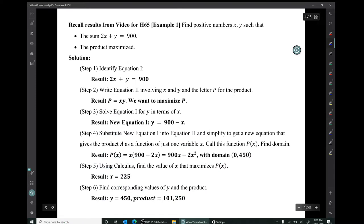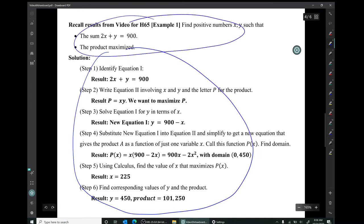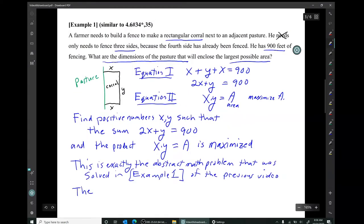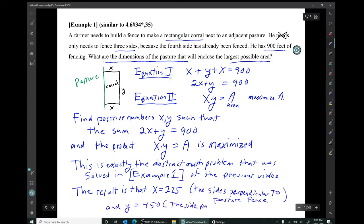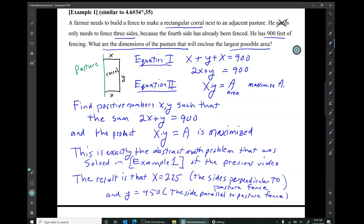So if we had not already done this math, we would go through these exact steps in the current example. We have the exact same starting point. We have an abstract math problem that's the same problem. Since we've already done this math, we can just cite these results.